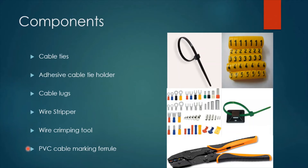Finally, we use the PPC cable marking ferrule, which is shown here. It is used to indicate the circuit number of the wire, which aids in the process of future maintenance of the distribution board, as we will see shortly.